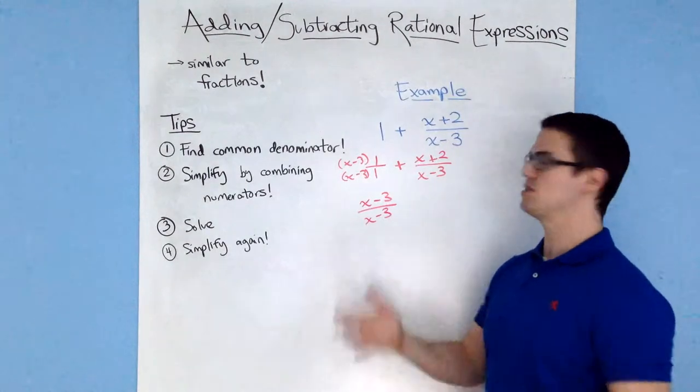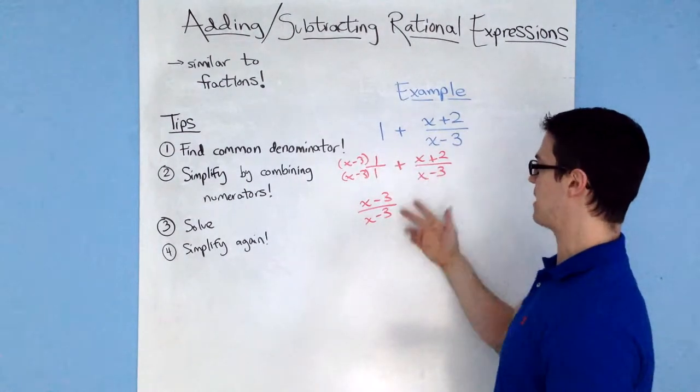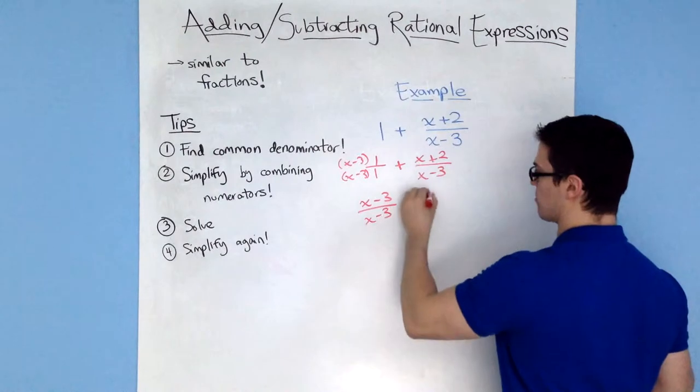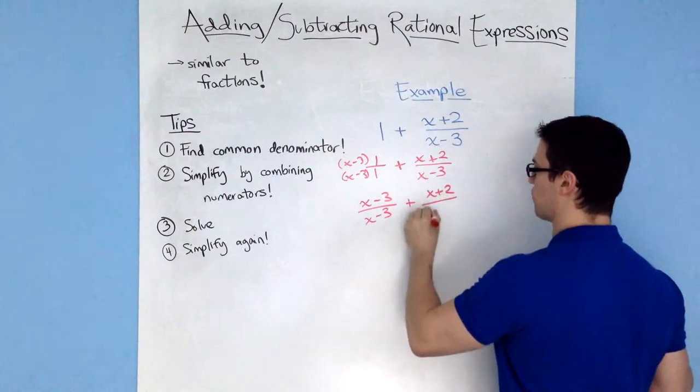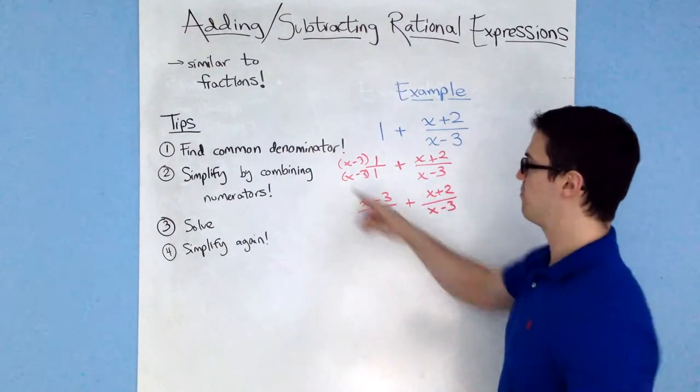So what I'm doing right here is kind of unsimplifying it to make it so I have common denominators, plus this term right here, the x plus 2 over x minus 3. So find the common denominator.